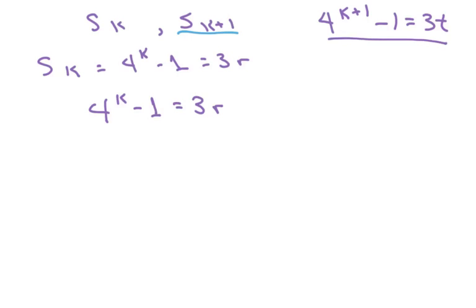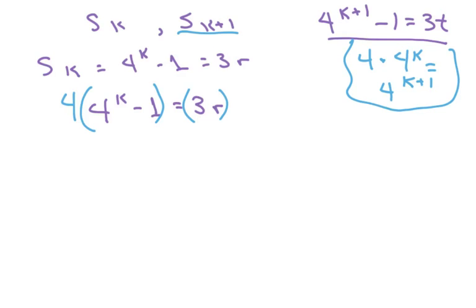That's what we want it to look like. So what I'm going to do is multiply both sides by 4. And you should know that 4 times 4 to the k equals 4 to the k plus 1. That's why we're multiplying both sides by 4. So when you distribute, you're going to get 4 to the k plus 1 minus 4 equals 12r.